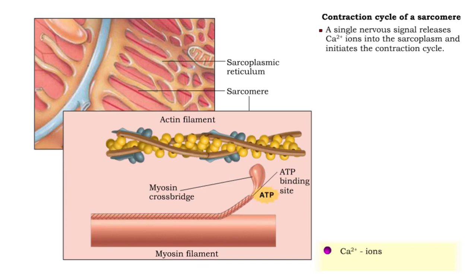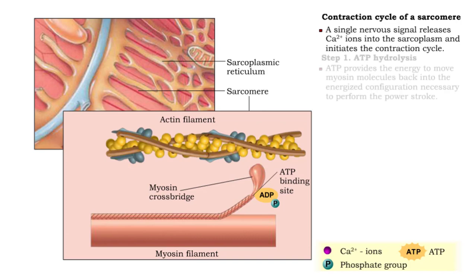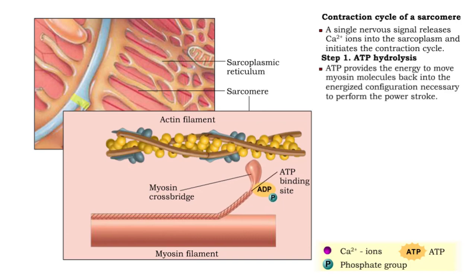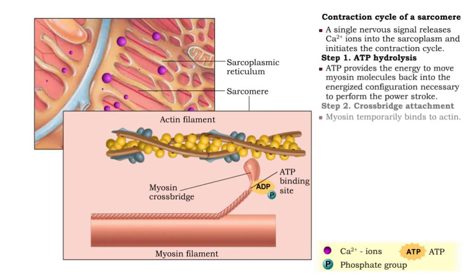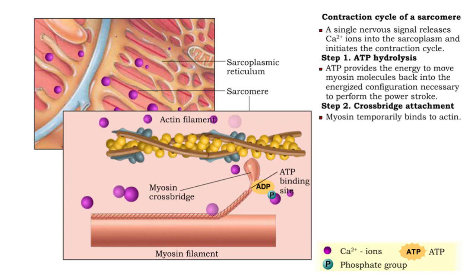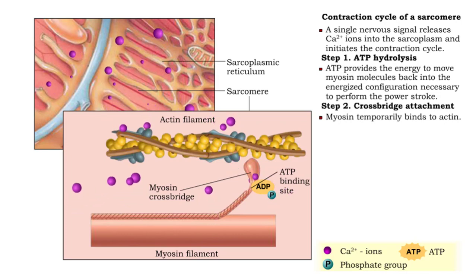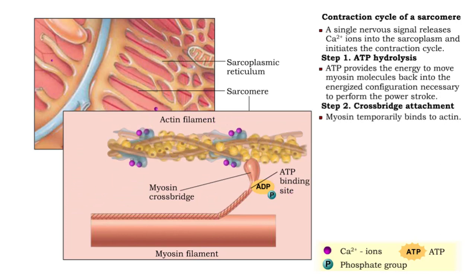First, ATP attached to the myosin crossbridge must be hydrolyzed to provide the energy needed to move the myosin protein. Second, actin and myosin filaments temporarily bind together.